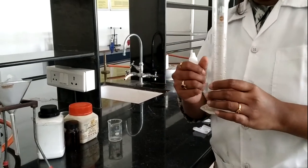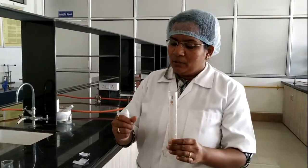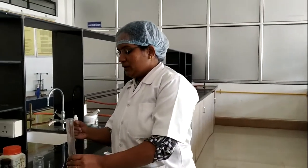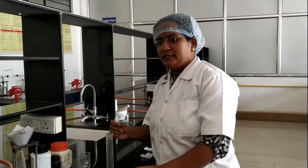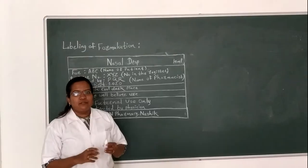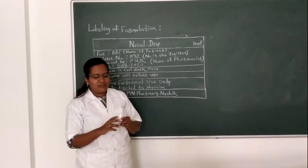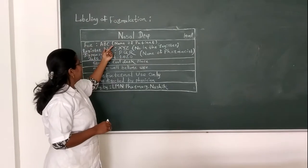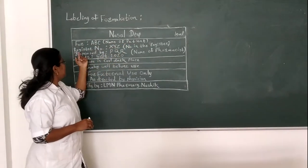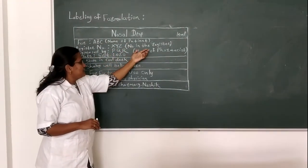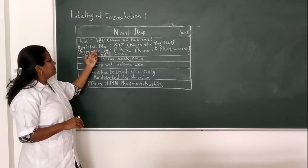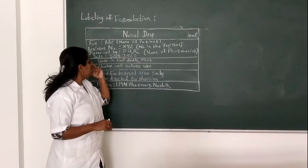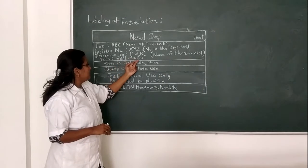Then close it for labeling part. After filling our formulation in this container, let's close it for labeling part. Label contains: nasal drop 10 ml for ABC (name of patient), register number XYZ (number given in the register), dispensed by PQR (name of pharmacist), manufacturing date September 2020.